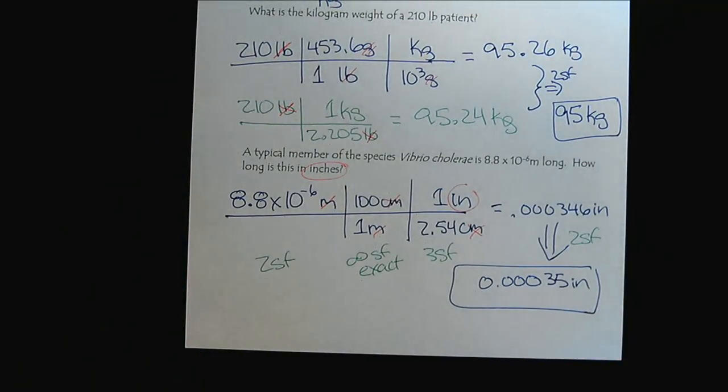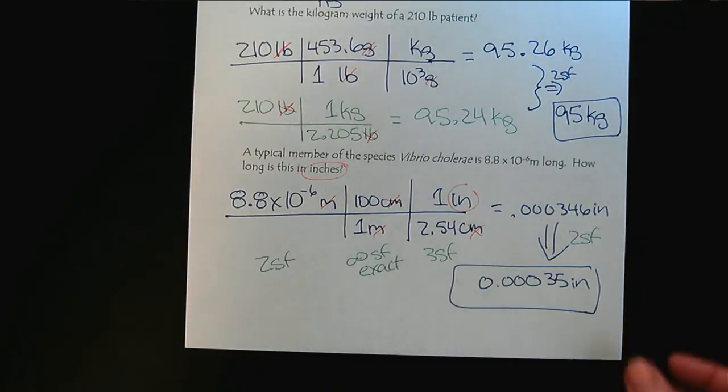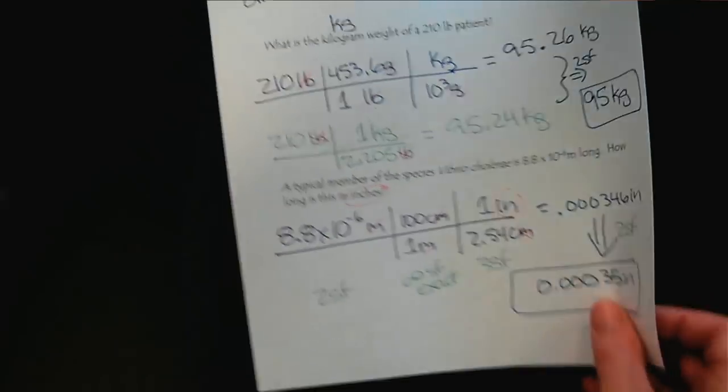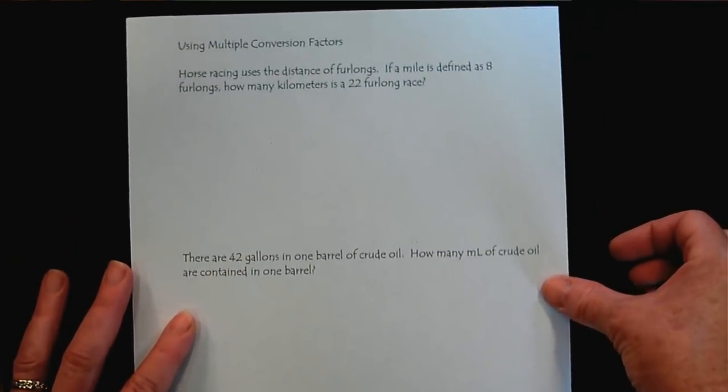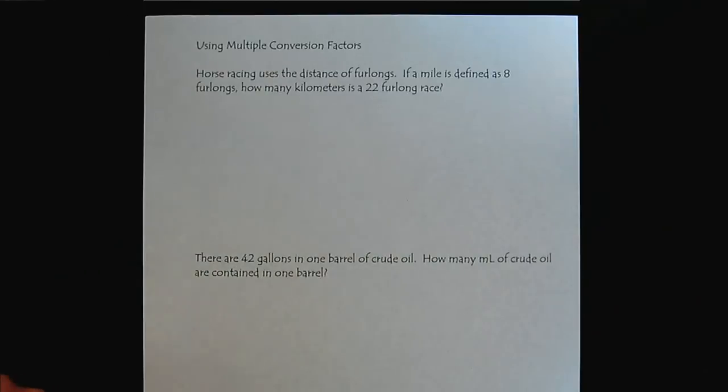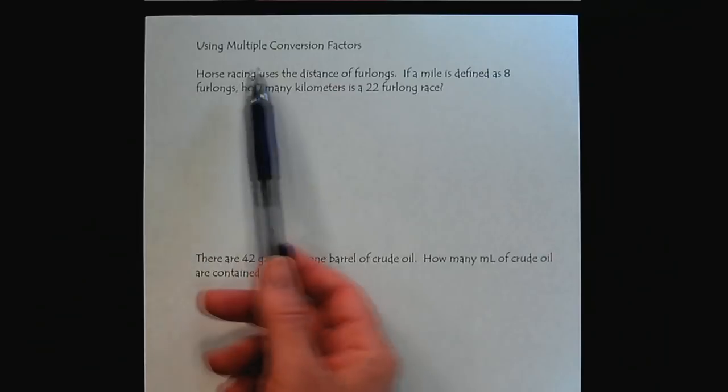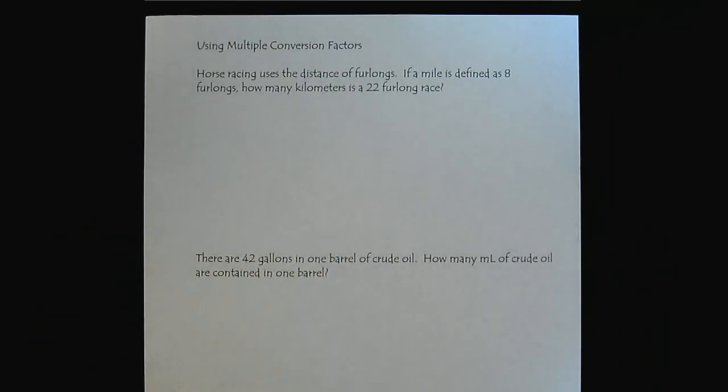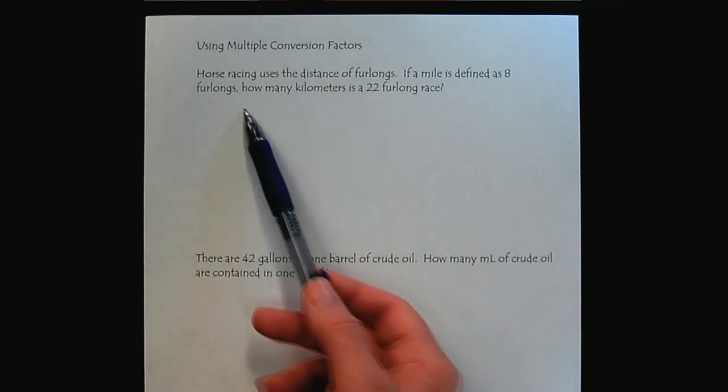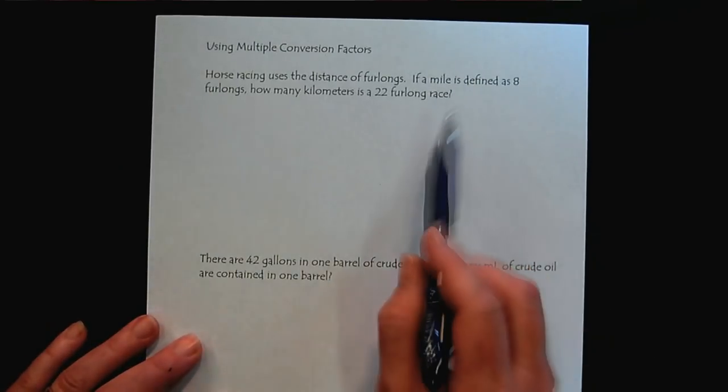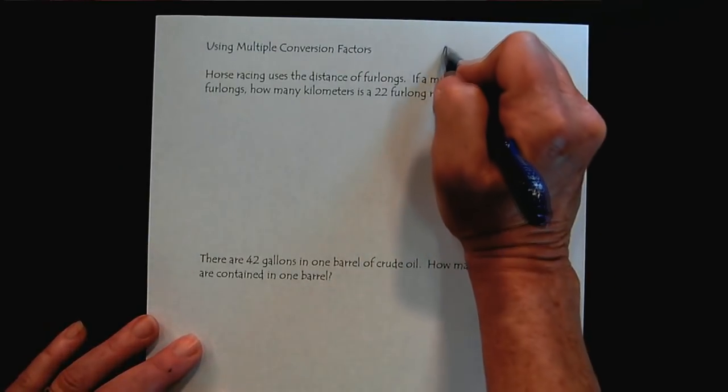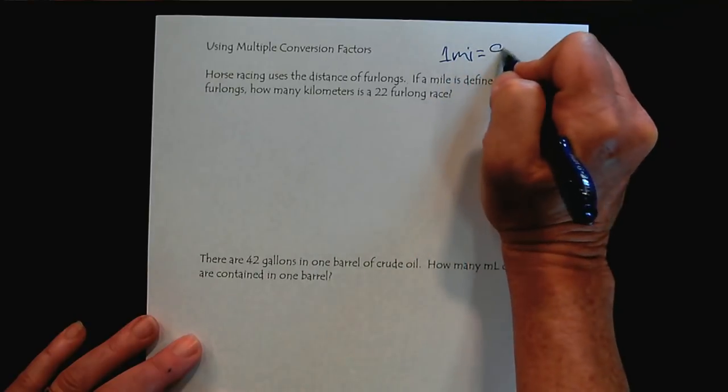So now let's go to some more challenging conversions to build our confidence. So now we're going to need several conversion factors. Horseracing uses the distance of furlongs. If a mile is defined as 8 furlongs, how many kilometers is a 22 furlong race?